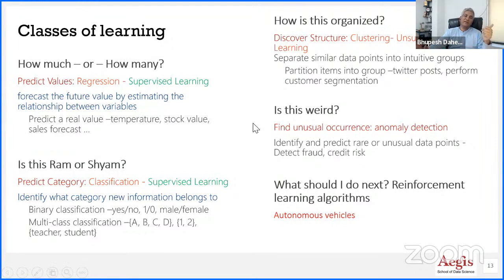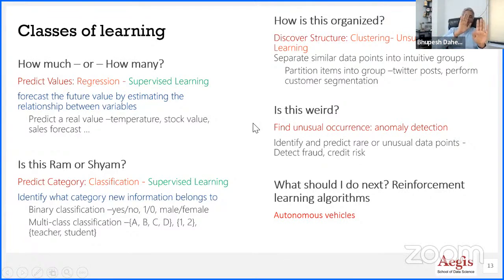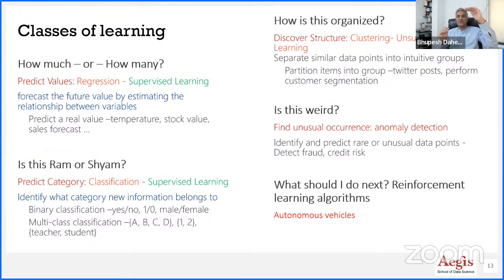Machine learning could be supervised learning — where you have data, you know the answers and the questions, you have labeled input and output data. You have a class of algorithms under supervised learning. Then there is unsupervised learning, which is a kind of clustering. Then semi-supervised learning, and reinforcement learning.